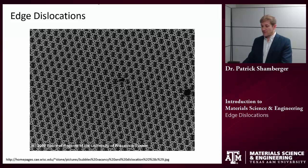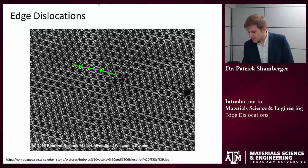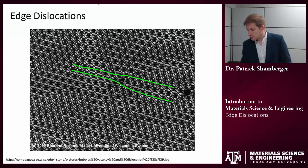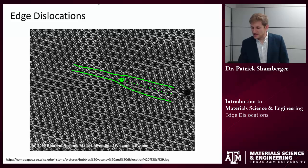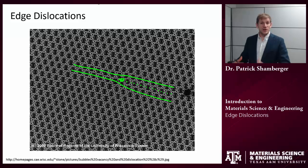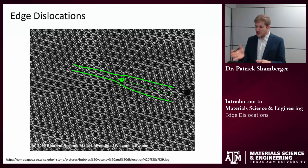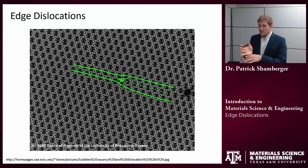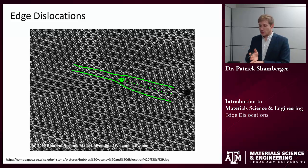At first glance it looks like a perfect lattice, but if I look closer I can see that if I draw one row of bubbles there, and another row here, I have an extra row in between the two. And it ends at some point, so there's a defect there. This is a two-dimensional representation, but if you can imagine the same thing in three dimensions, we would have a crystal lattice with an extra half a plane of atoms. And that edge that bounds that extra half a plane is called an edge dislocation.